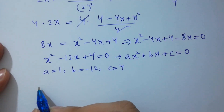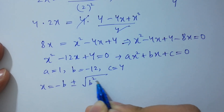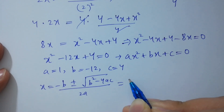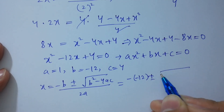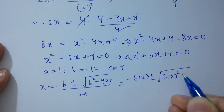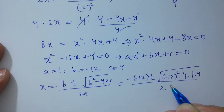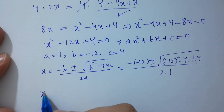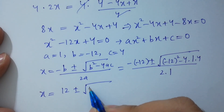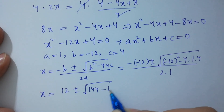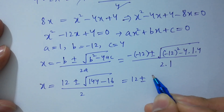Apply the quadratic formula: x equals minus b plus or minus square root of b squared minus 4ac, all over 2a. Putting in the values: b is minus 12, so we get 12 plus or minus square root of 144 minus 4 times 1 times 4, all over 2.